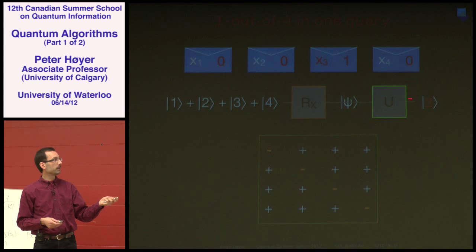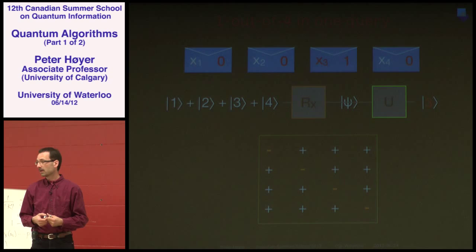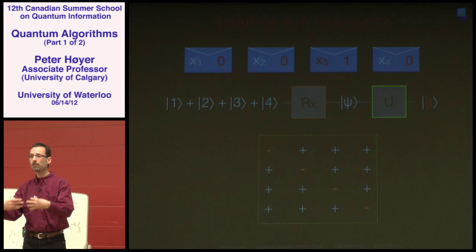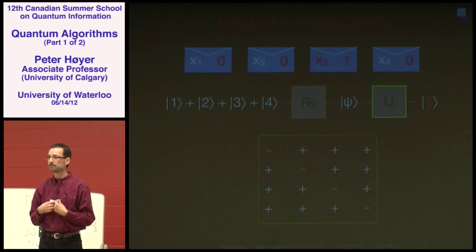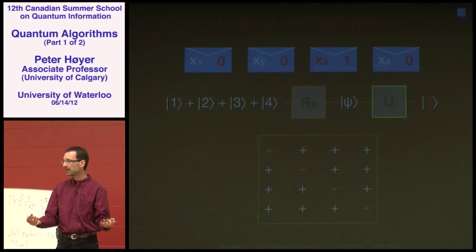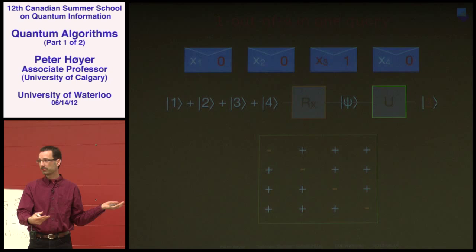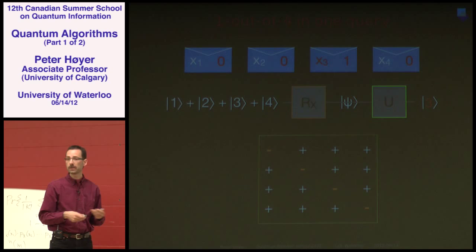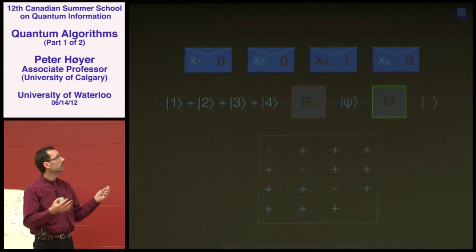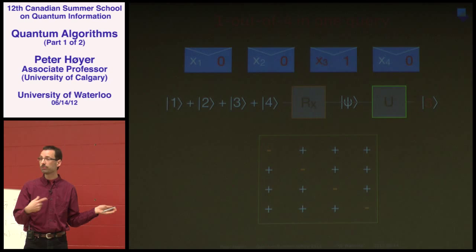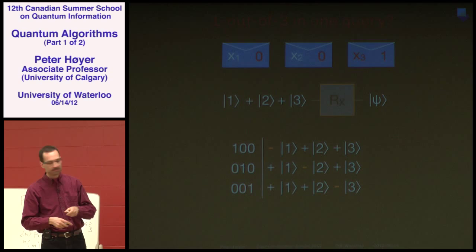If we apply this unitary after the query, we get one of the computational basis states out — in this case |3⟩, because the one is hidden in envelope three. This algorithm is really just a quantum version of the classical randomized algorithm, cleaned up: by taking an arbitrary classical randomized algorithm and doing the obvious thing of setting up a superposition of everything at the beginning, you would have discovered this. We can solve the problem of finding a one among four envelopes in just one quantum query, whereas classically we need three — a speedup of a factor of three.